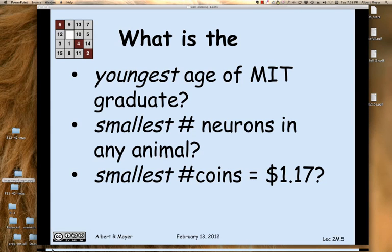We take for granted the well-ordering principle just all the time. If I ask you what was the youngest age of an MIT graduate, you wouldn't for a moment wonder whether there was a youngest age. And if I ask you for the smallest number of neurons in any animal, you wouldn't wonder whether there was a smallest number of neurons. We may not know what it is, but there's surely a smallest number. And if I ask you what was the smallest number of US coins that could make $1.17, again, we don't have to worry about existence because the well-ordering principle knocks that off immediately.